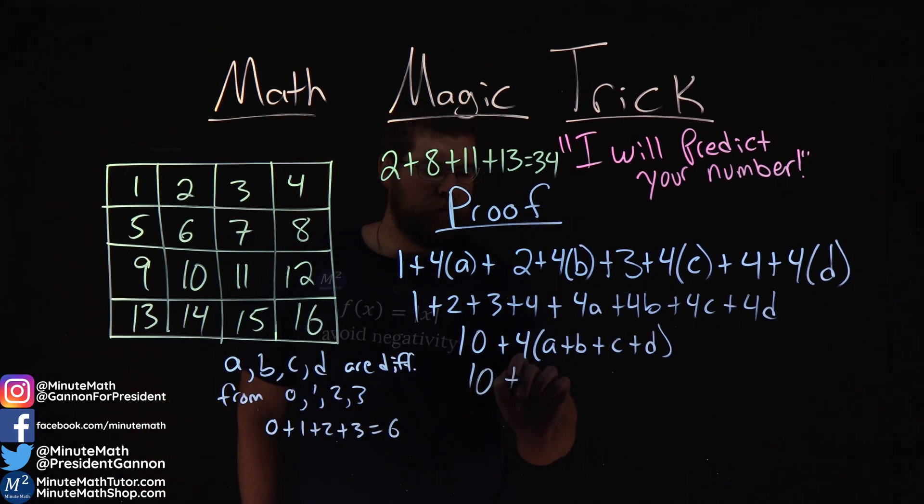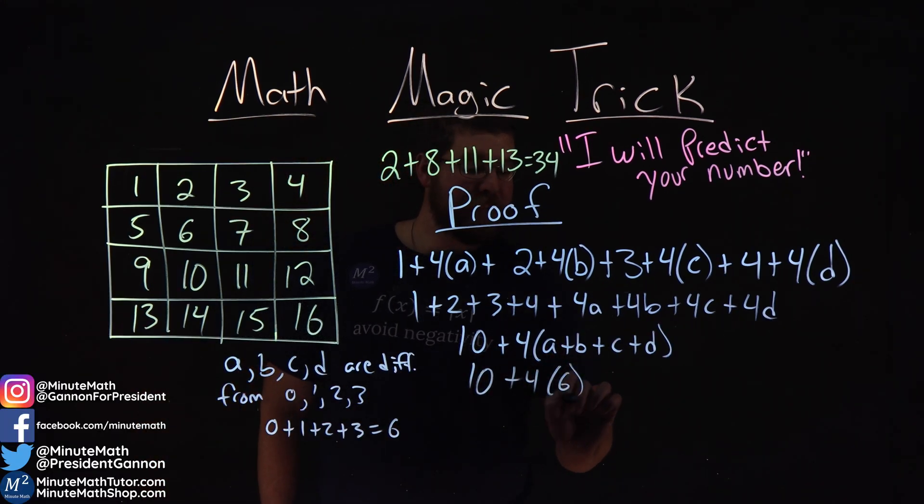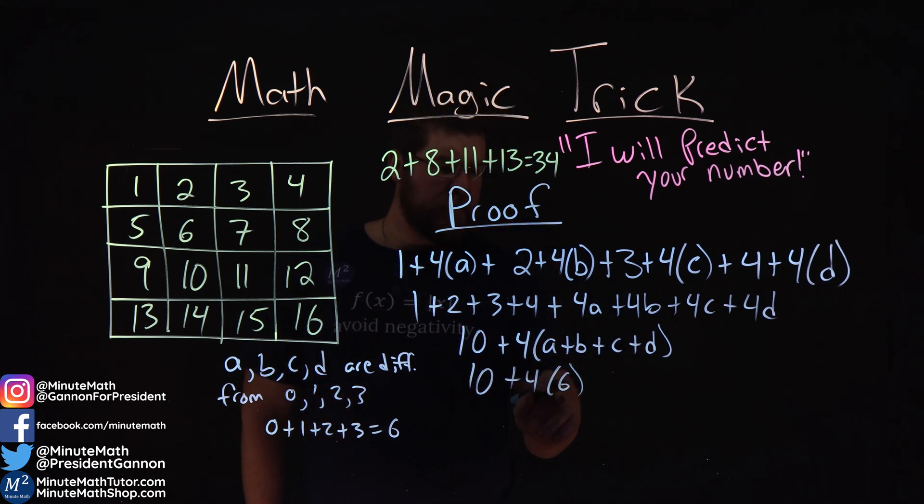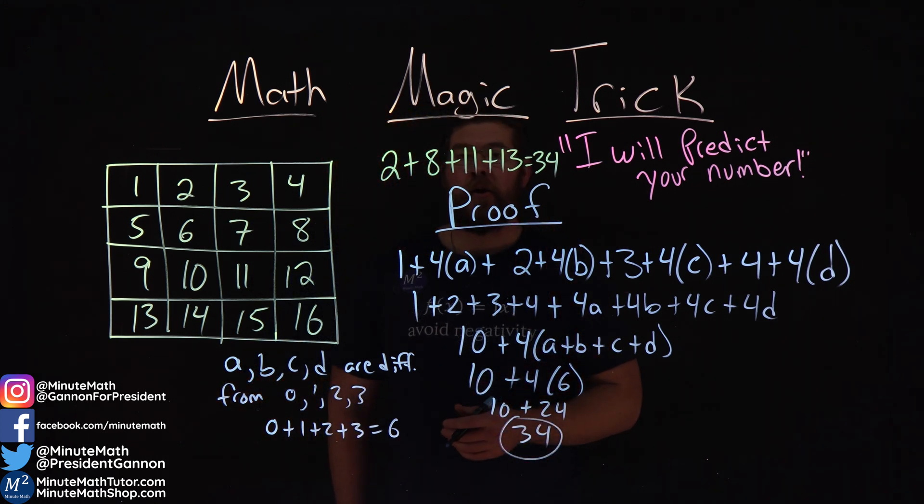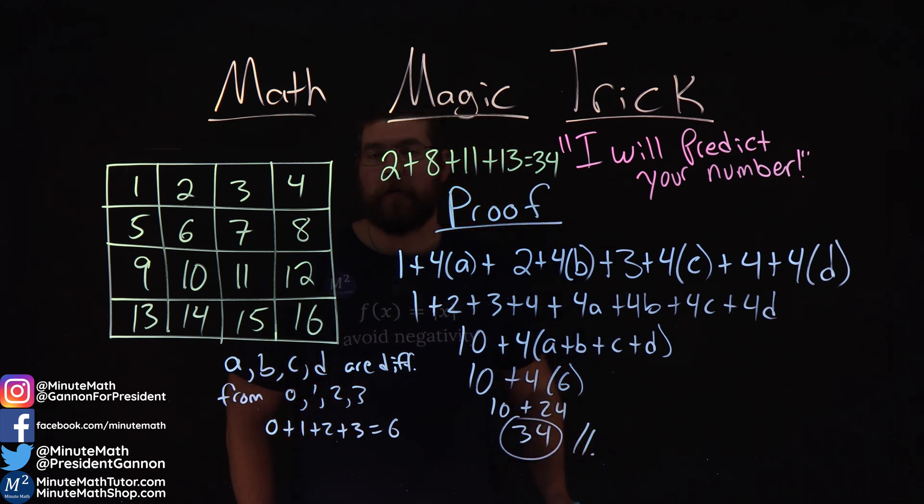So we have ten here plus four times six right there, and then four times six is twenty-four. Ten plus twenty-four, and there we have it. No matter what values you pick by setting it up, we will always get a value of thirty-four.